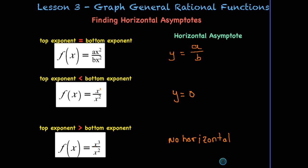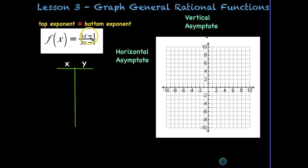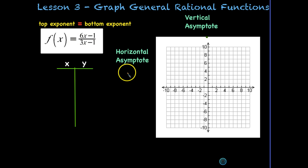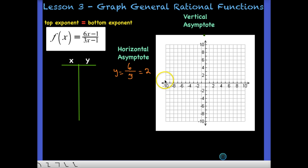Let's try three examples, one for each case. In our first example we can tell this isn't a simple rational function because we have a variable in the numerator. Since the top exponent equals the bottom exponent, we take the coefficient 6 from the numerator and divide it by the coefficient 3 from the denominator to get 2. So our horizontal asymptote is y = 2.